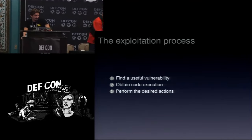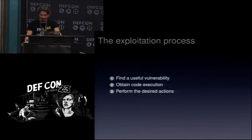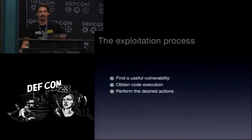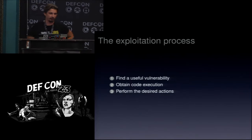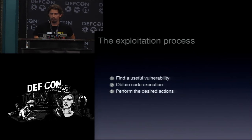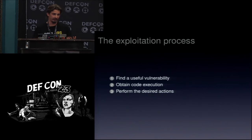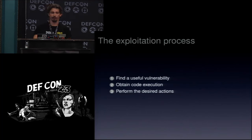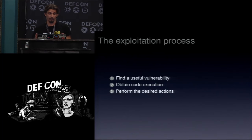Now it's a bit warmer. So let's see how the usual exploitation process takes place. If you're an exploiter trying to exploit something, first you have to find a vulnerability, and this vulnerability has to be useful — meaning you have to be able to basically divert the control flow of the program to some address you want.